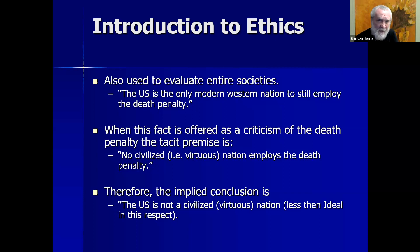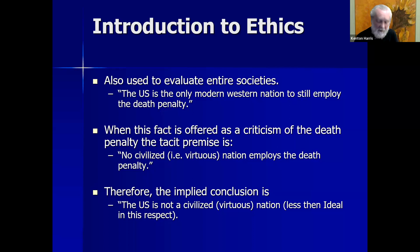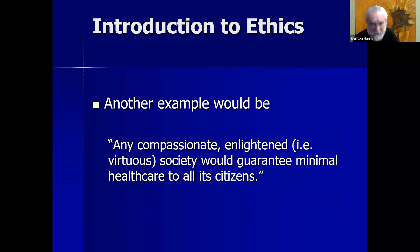Virtue ethics can also be used to evaluate entire societies — we might understand a society as being admirable and virtuous or less than admirable. For instance, the fact that the U.S. is the only modern Western nation to still employ the death penalty is sometimes used as evidence that we're not as virtuous as we might be. Similarly, one might argue that any compassionate, enlightened society would guarantee minimal health care to all its citizens, suggesting that if we want to be a virtuous society, we should do precisely that.